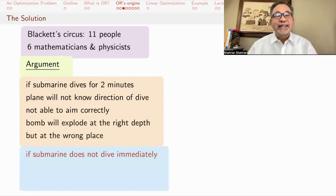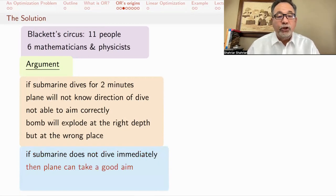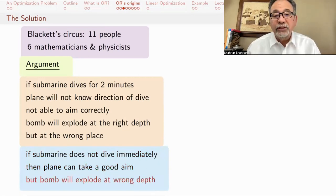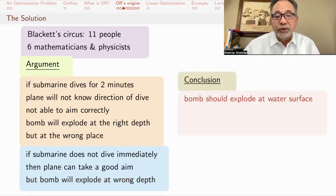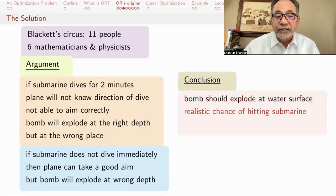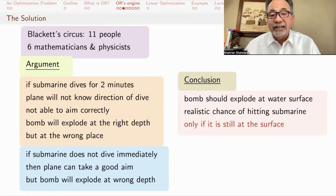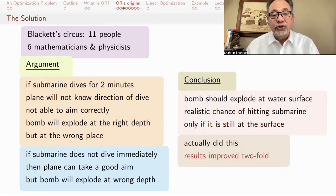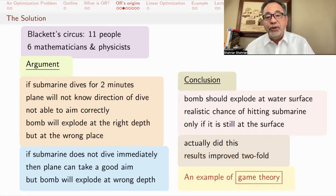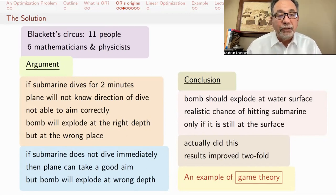On the other hand, if the submarine does not dive immediately, it doesn't realize that a plane is coming to bomb it, then the plane can take a good aim. But then the bomb is set to explode at the wrong depth. Their conclusion was that they should have the bomb explode at the water surface, because the only realistic chance of hitting the submarine is if it's still at the surface and didn't realize that the plane is coming. They actually did this, and the results apparently improved twofold. This is an example of what we would call game theory, where your actions depend on the opponent's actions, and you have to think through what the possibilities are.